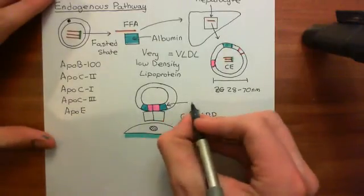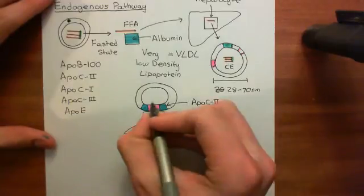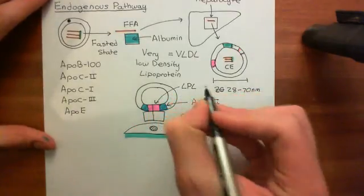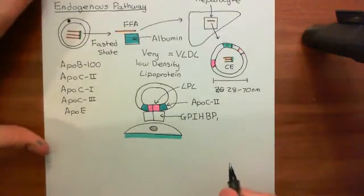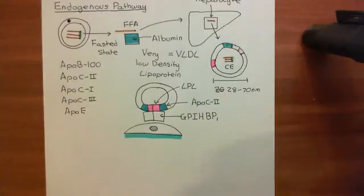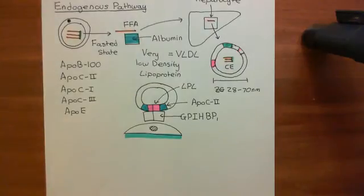So let's label up the components of this picture: here we have apolipoprotein C2, here we have lipoprotein lipase (LPL), and here we have glycosyl-phosphatidyl-inositol-anchored HDL-binding protein 1. That's how we deliver fats to our skeletal and cardiac muscle cells when we are in the fasted state and therefore don't have a large supply of lipids coming from the intestine in the form of chylomicrons.